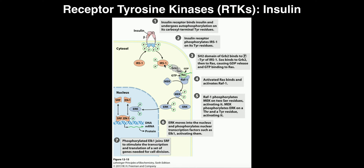IRS-1, only when phosphorylated, binds and activates GRB-2, and stays connected to it. GRB-2 binds and activates SOS — called 'son of sevenless.' SOS becomes activated, and then we have another G-protein called RAS. Just like any G-protein, RAS must have bound GTP to be active. When RAS with bound GTP contacts SOS, it becomes activated. Then RAF-1, upon contact with activated RAS, becomes activated as well.